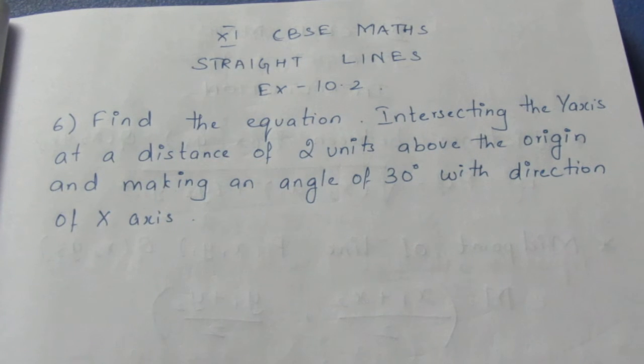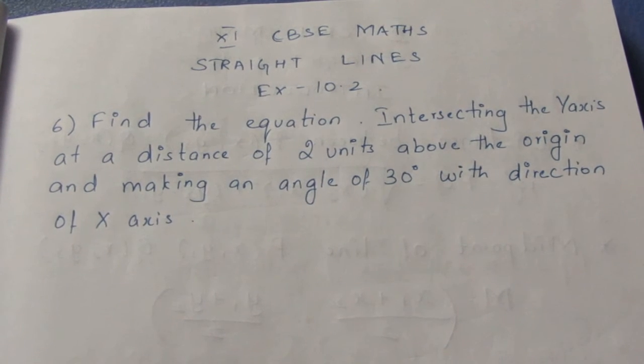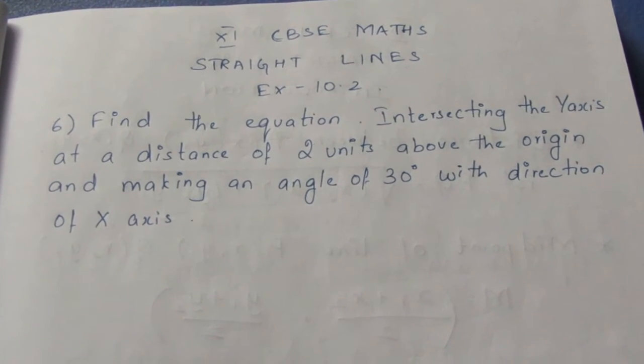Find the equation intersecting the y-axis at a distance of 2 units above the origin and making an angle of 30 degrees with the direction of the x-axis.